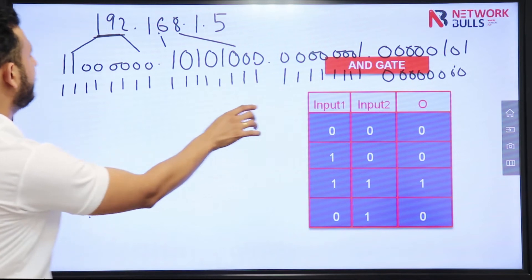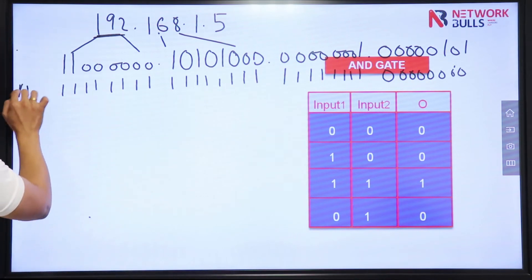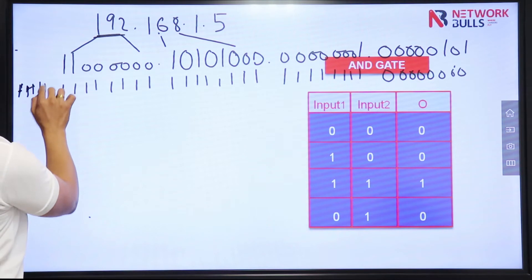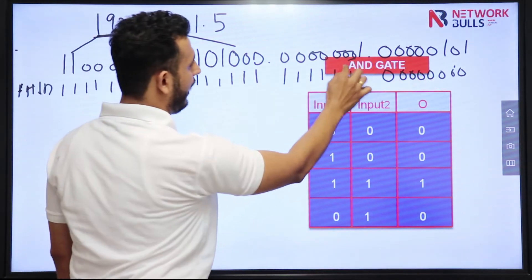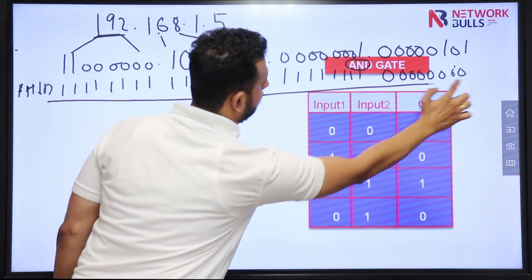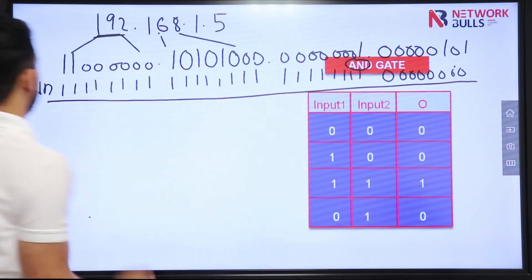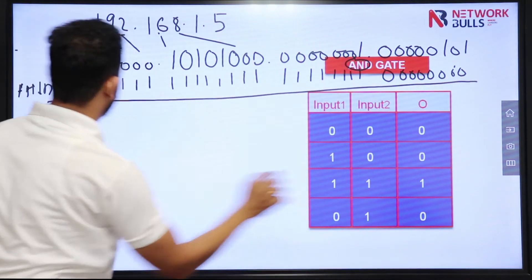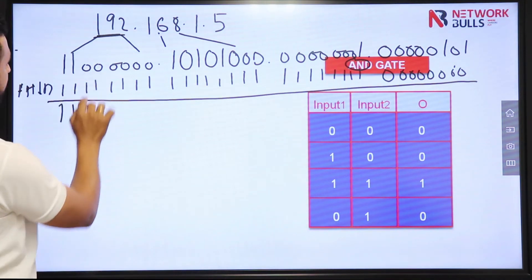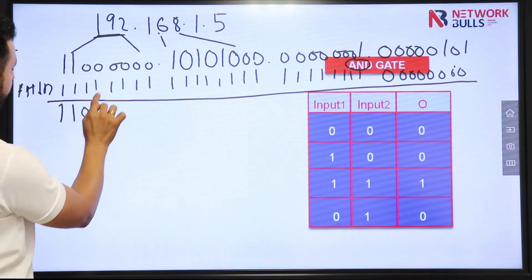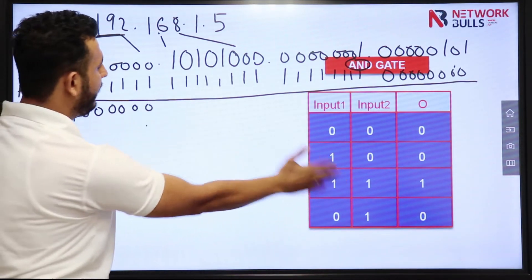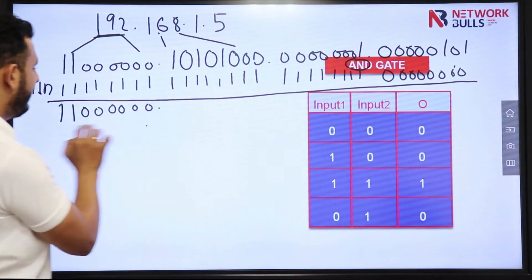Now just apply the AND gate between the IP address and the subnet mask. Looking at the AND gate truth table and writing the output: for the first three octets, the AND of the IP with all 1s gives us the same values — 11000000, 10101000, and 00000001.